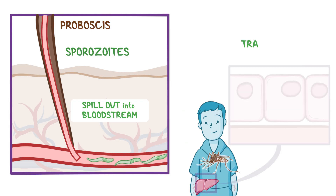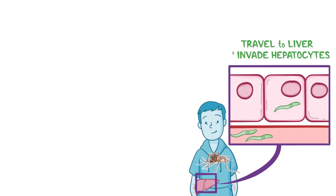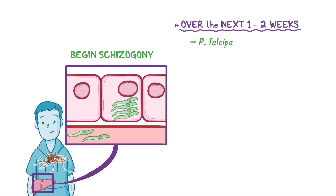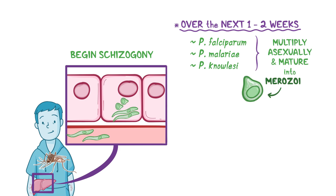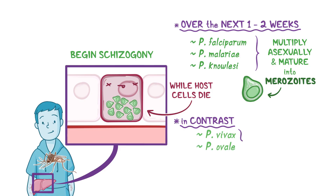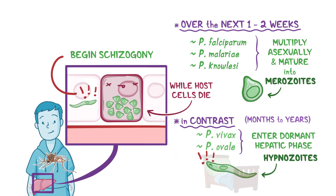The sporozoites then travel to the liver, where they invade hepatocytes. There they begin asexual reproduction, also known as schizogony. Over the next 1-2 weeks, plasmodium falciparum, plasmodium malariae, and plasmodium knowlesi sporozoites multiply asexually and mature into merozoites, while host hepatic parenchymal cells die. In contrast, plasmodium vivax and plasmodium ovale sporozoites enter into a dormant hepatic phase, where they're called hypnozoites. They can remain in this dormant phase for months to years, until they wake up and begin schizogony.